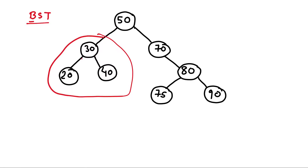Similarly, for node 30, the left subtree has just one element, 20, which is less than 30, and on the right subtree it's 40, which is more than 30. In the right subtree of 50, we see that 70, 75, 80, and 90 are all bigger than 50. This is a binary search tree.